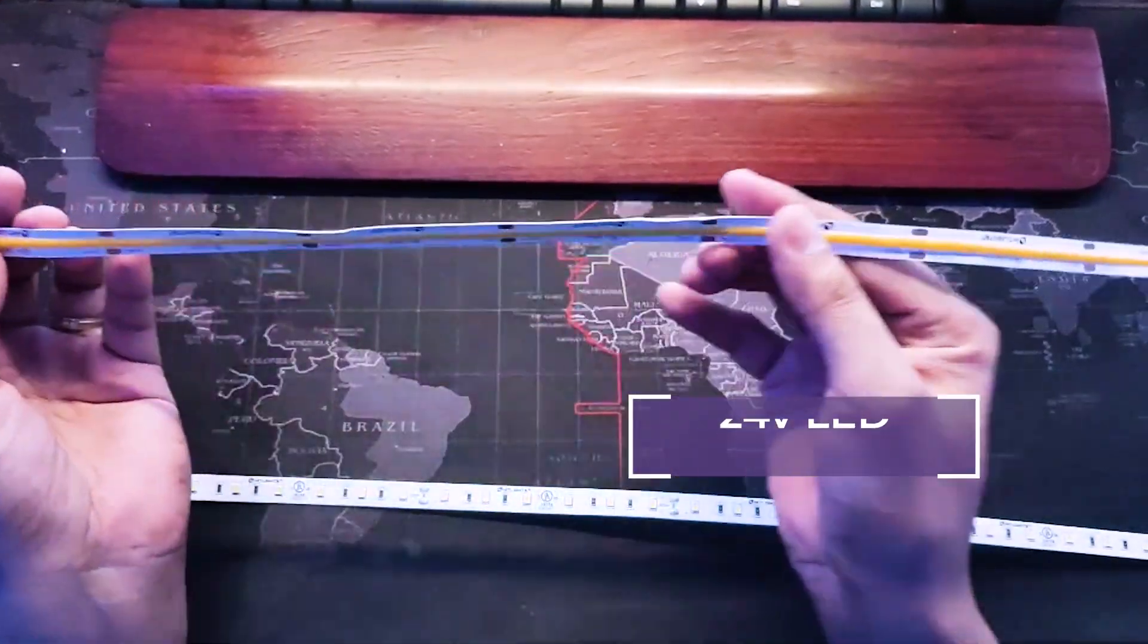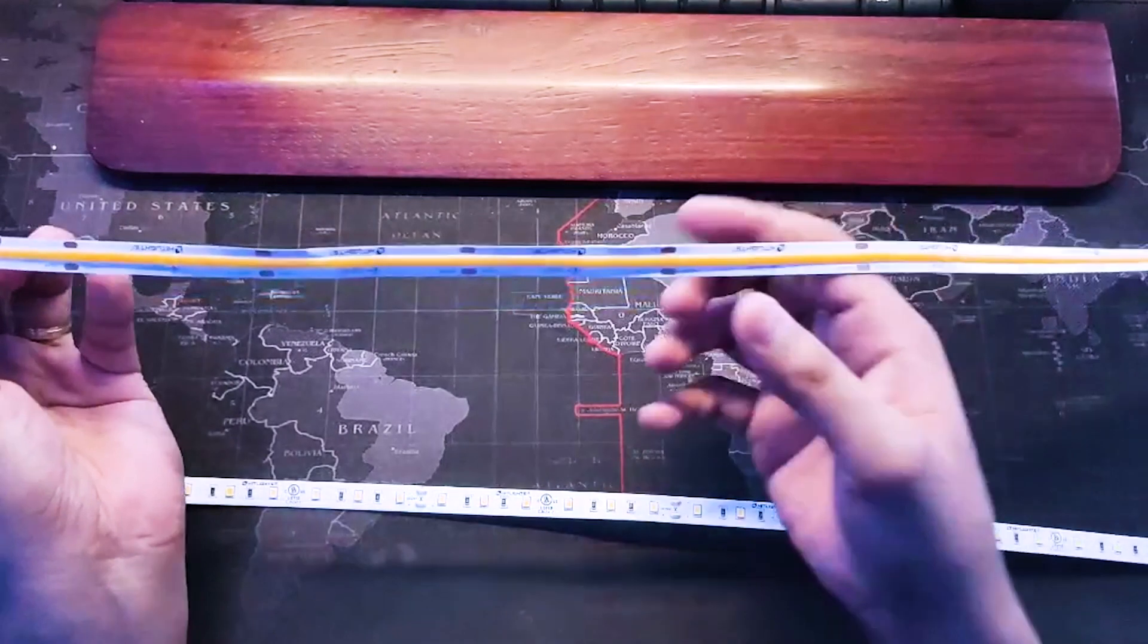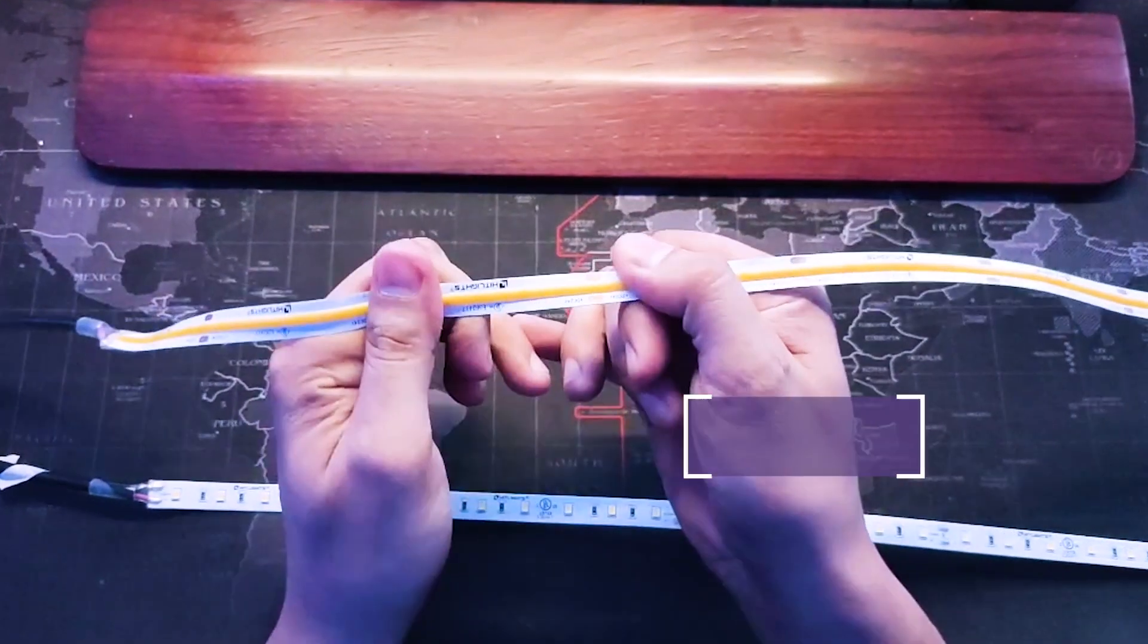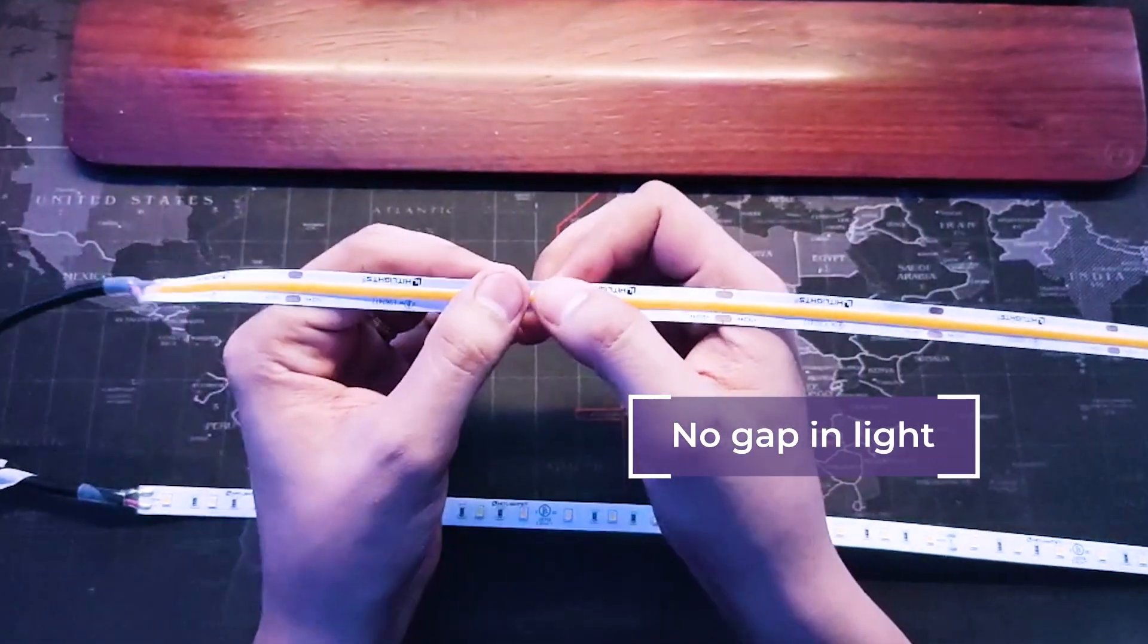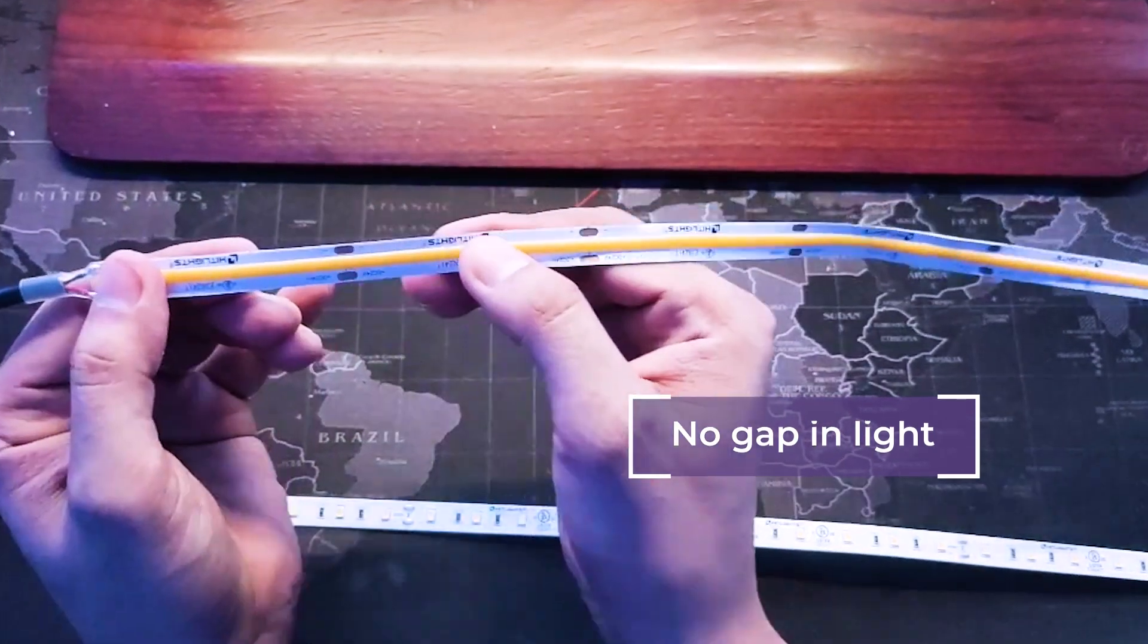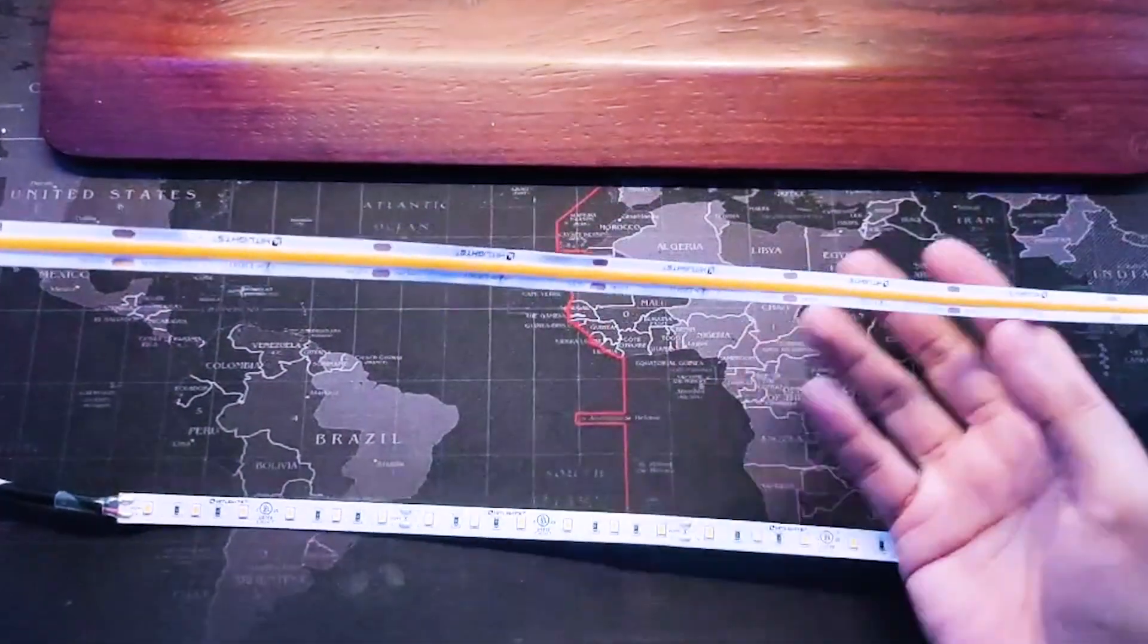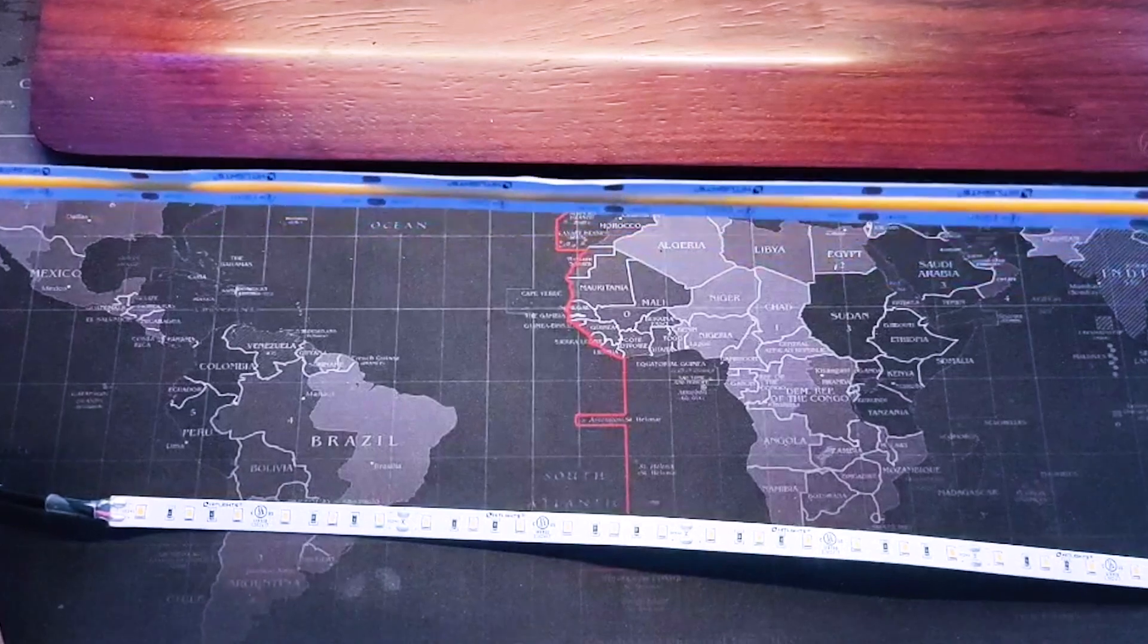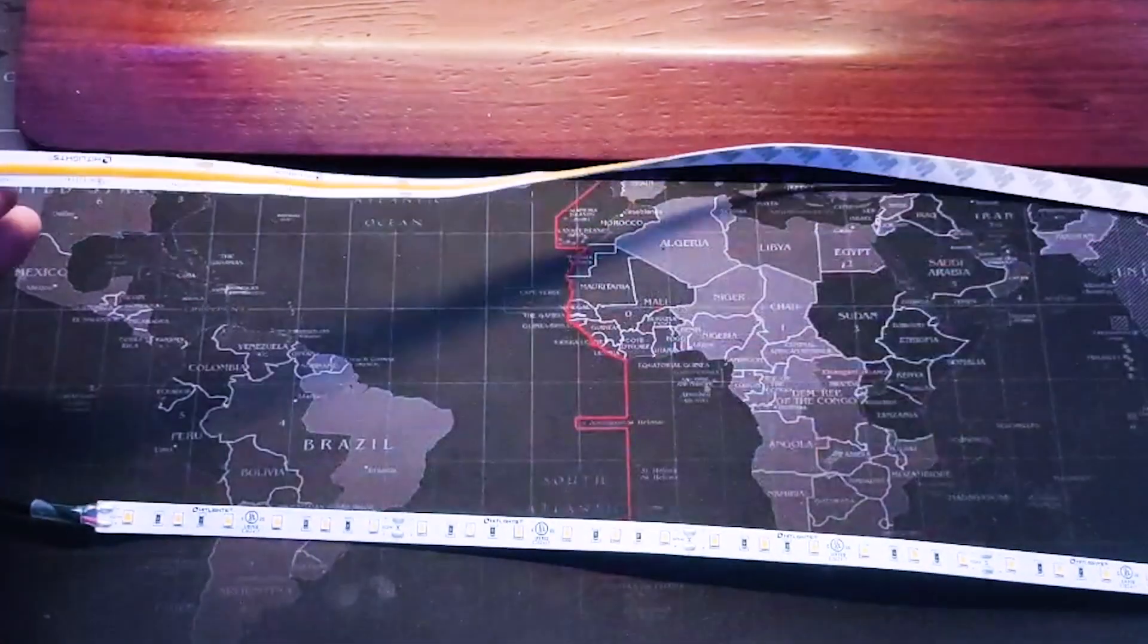So the COB strips have one linear or no-gap LEDs. That's the COB technology that we have versus the SMD chips or LED chips. You'll notice that there are gaps in between.